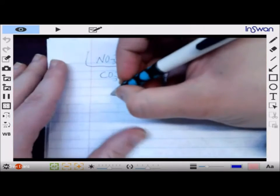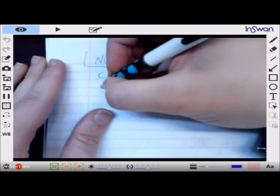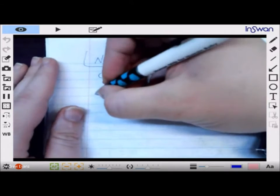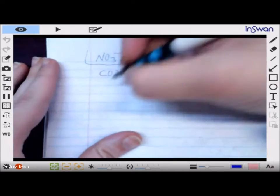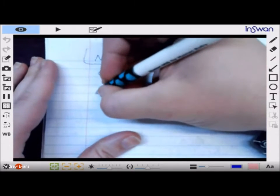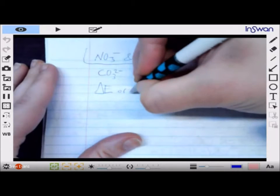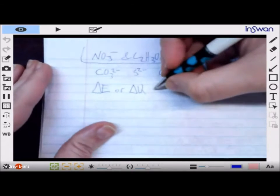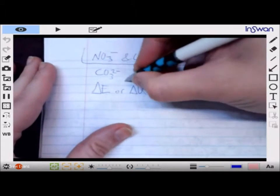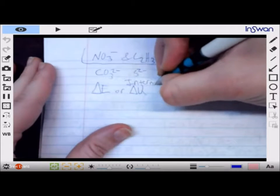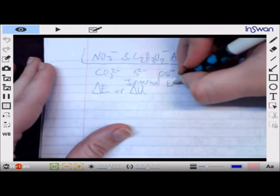Let's look at some basic energy stuff. Internal energy, which you could look at as delta E or delta U - the idea of internal energy is the...